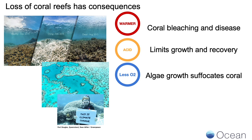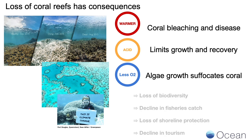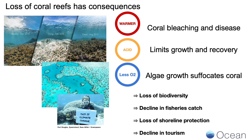From more acidic oceans, coral reef growth and recovery is limited. And from less oxygen — when you have less oxygen, it affects coral growth rates directly, but algae still grow well, so algae can outcompete and suffocate corals. All of this combined — losses from disease, bleaching, and competition — can lead to a loss of biodiversity, decline in fish catch, loss of shoreline protection, and decline in tourism, all of which affects people. So we need some way of trying to limit these losses.